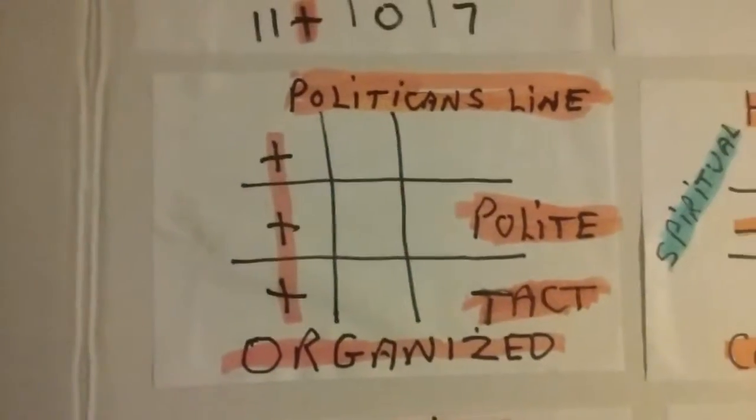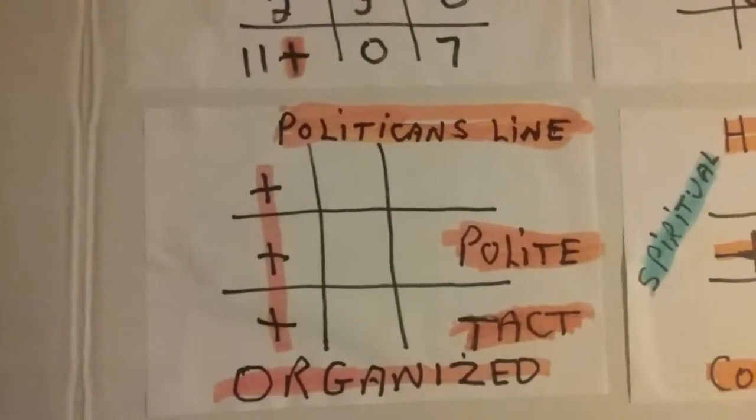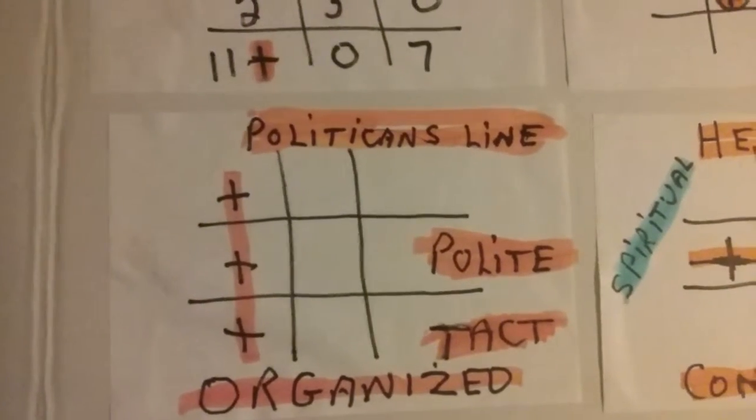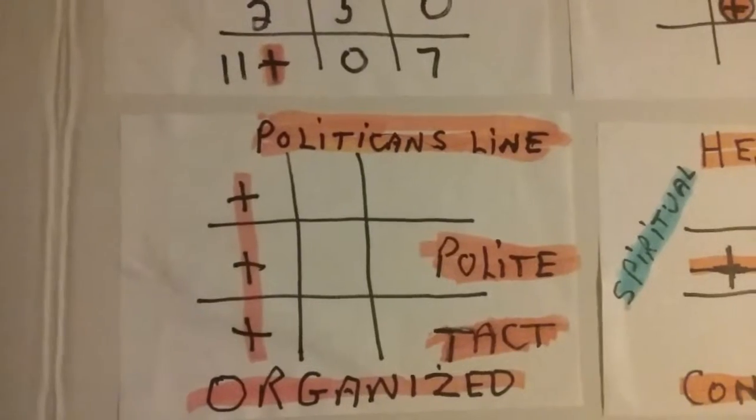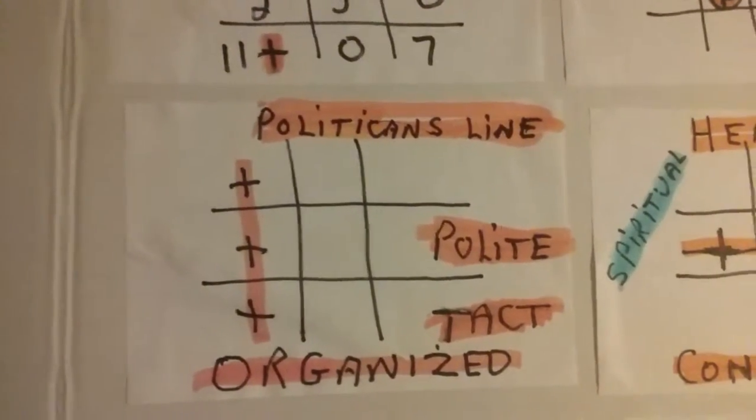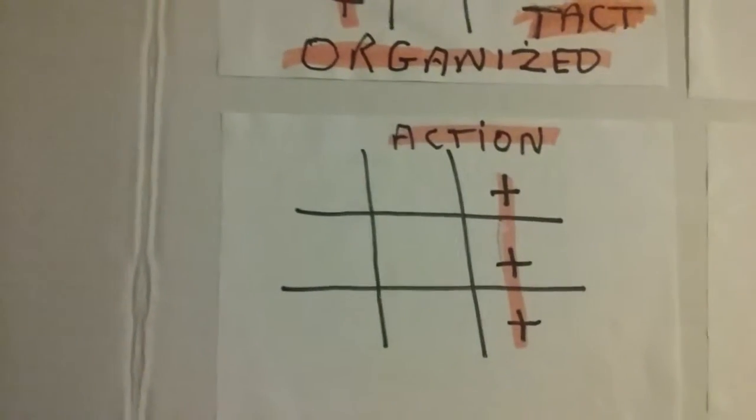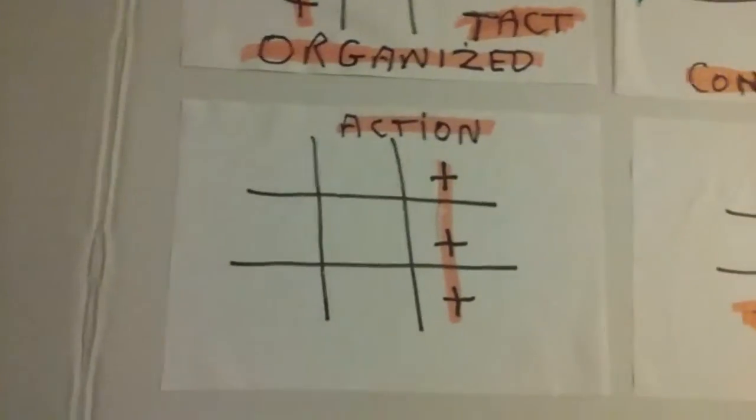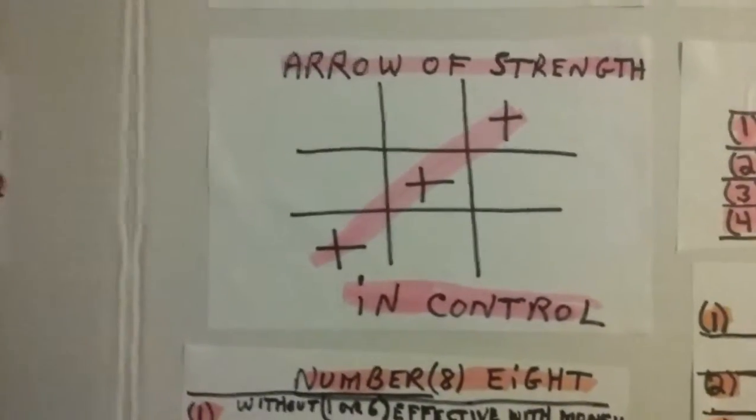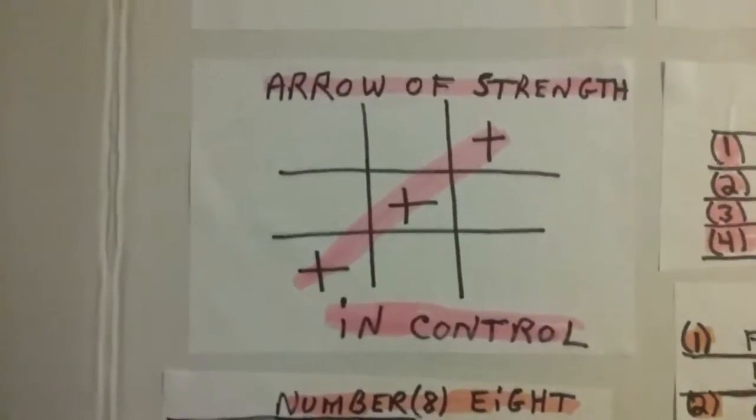I'm showing the politician's arrow, a straight sequence up on the left side indicating someone polite, tactful, organized. The arrow of action shows when this line is full, the person is very motivated. Otherwise, they're afraid to do something or they don't have the confidence or certainty to go ahead. This is the arrow of strength, meaning they feel in control.